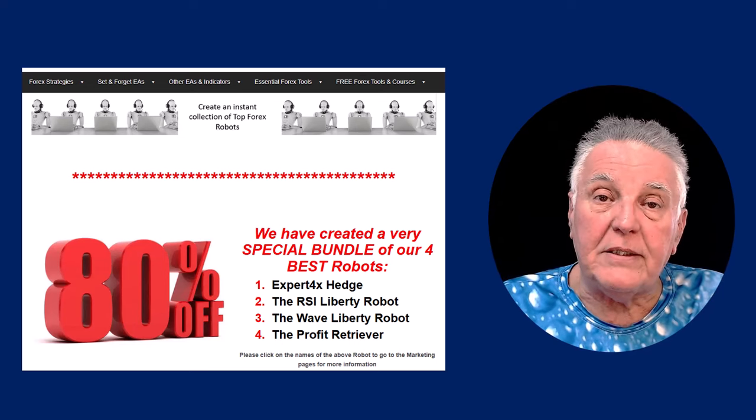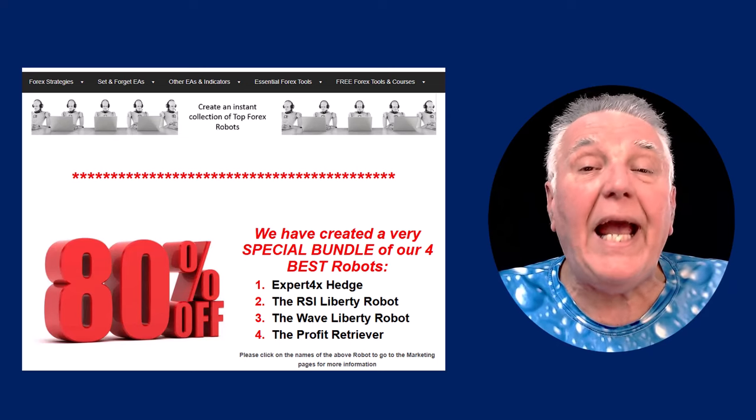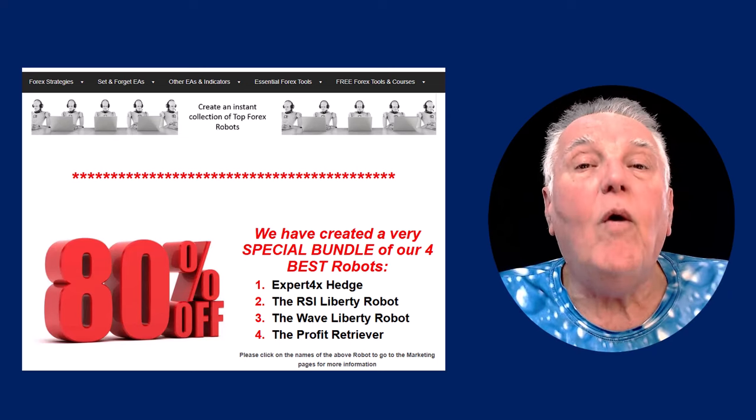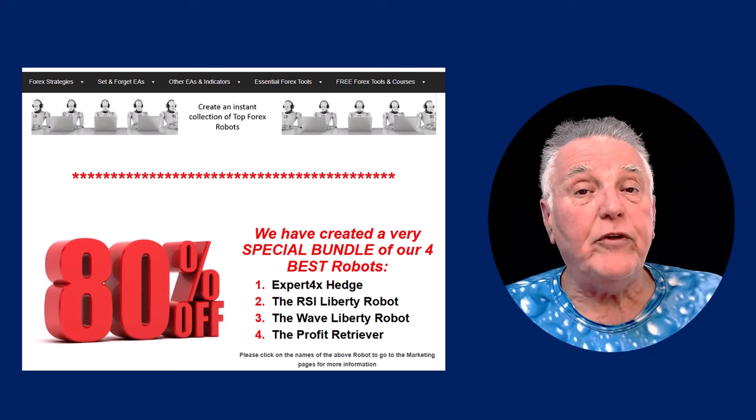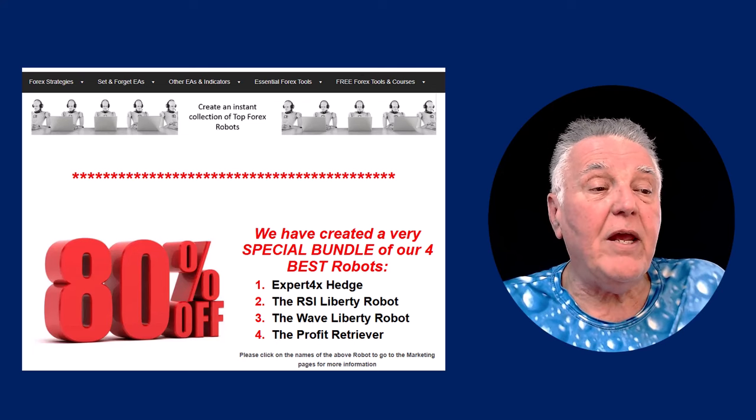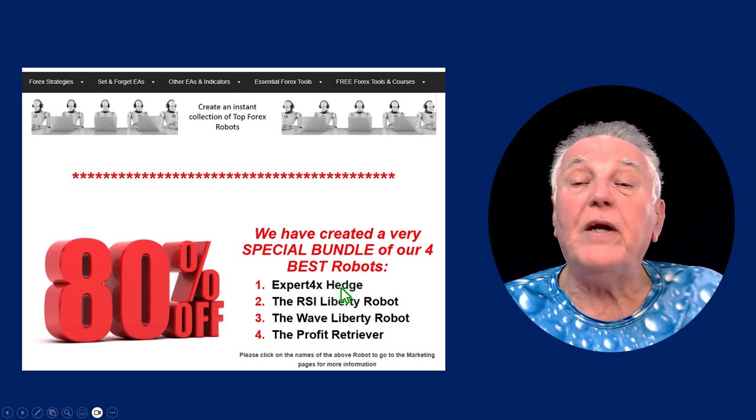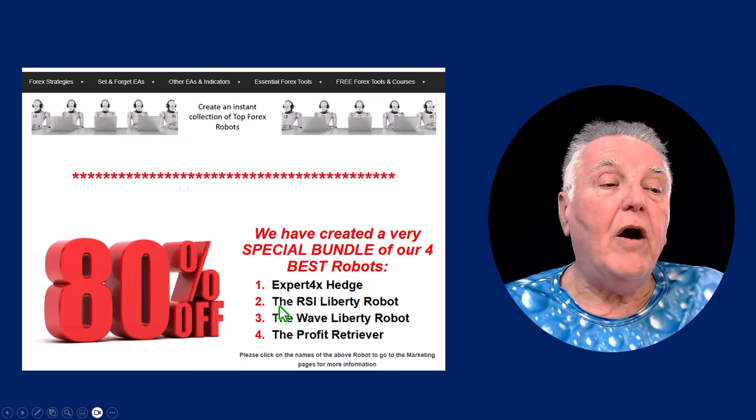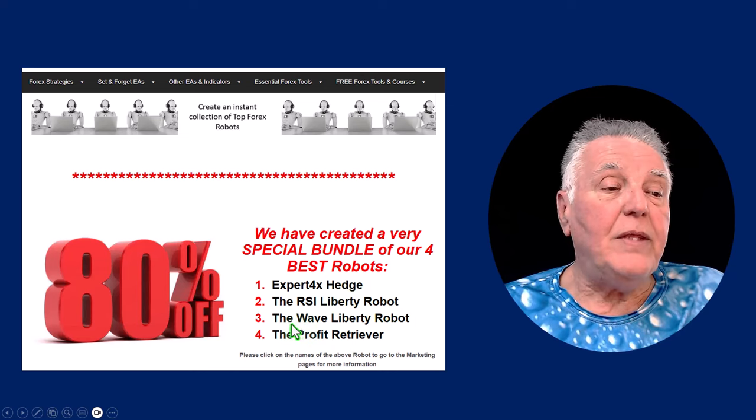And they are the Expert Forex Hedge Trader, the RSI Liberty Robot, the Wave Liberty Robot, and then the Profit Retriever, the big daddy that started the profit retrieval process. Those four EAs can be purchased for 80 percent off.